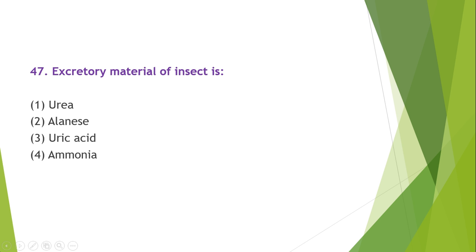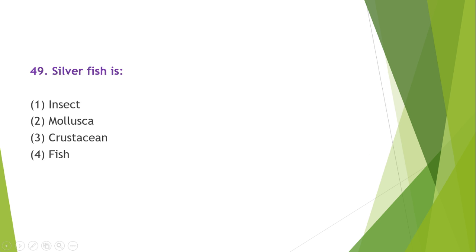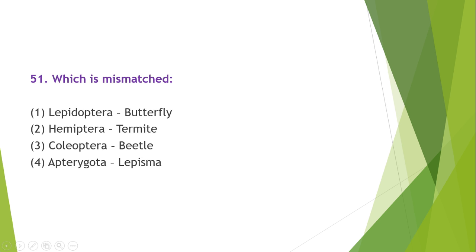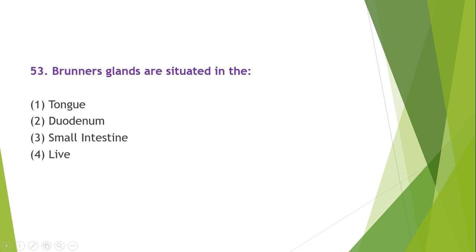The excretory material of insects is uric acid. Ligament joins bone to bone. Silver fish is an insect. The main enzyme present in gastric juice is pepsin. The mismatched pair among the following is Hemiptera-termite, as termite is not a hemiptera. The snake is not a warm-blooded animal.